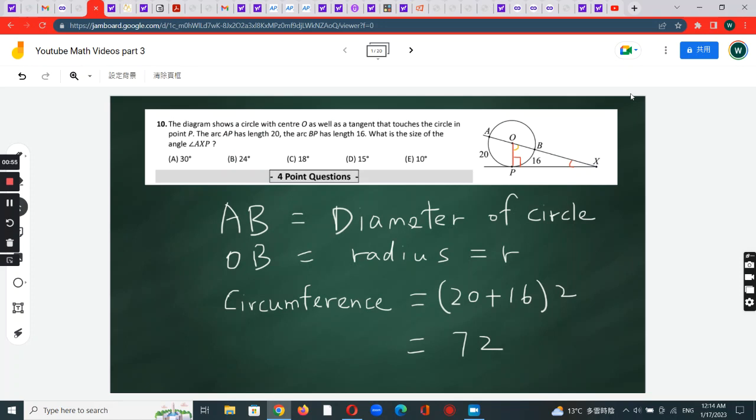We have a diagram that shows a circle right here, and this line underneath it is a tangent. O is the center of the circle.